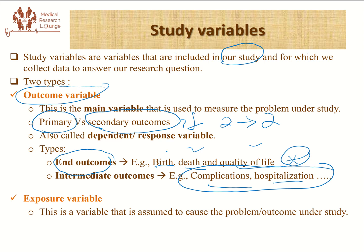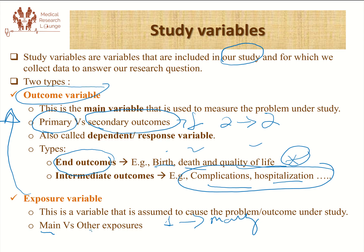The other type of study variable is the exposure variable. Exposure variables are variables assumed to cause the problem or the outcome we are studying — factors assumed to affect our outcome. Unlike our outcome variable, for one research question we're supposed to have one outcome, but we're supposed to have many or multiple exposures, because unless we control many exposure variables at a time, we won't be able to understand the pure effect of one exposure on the outcome. Exposure variable is also referred to as independent variable, explanatory variable, or predictive variable.